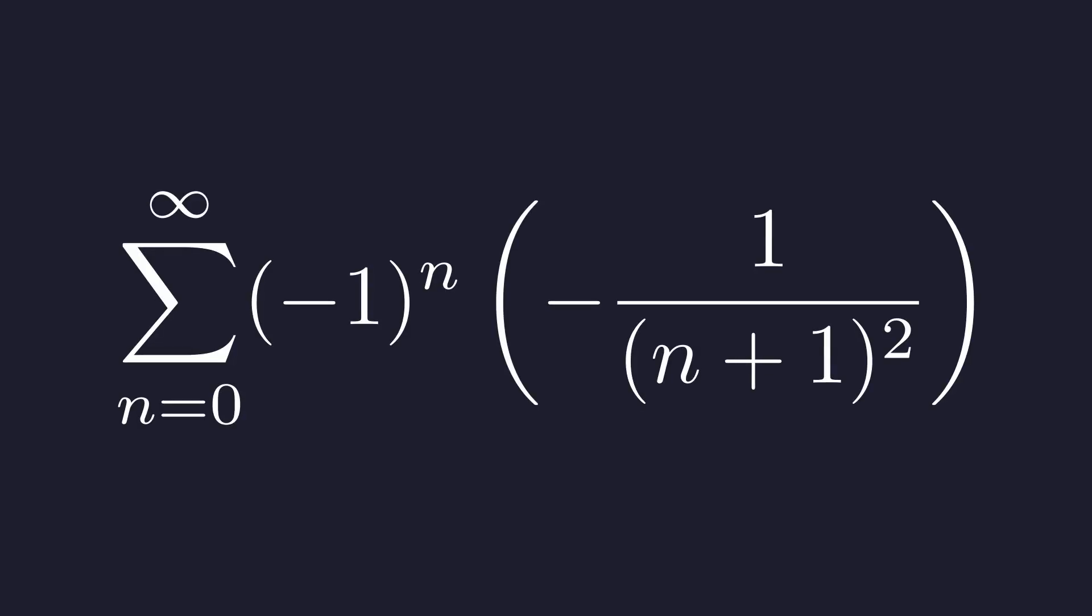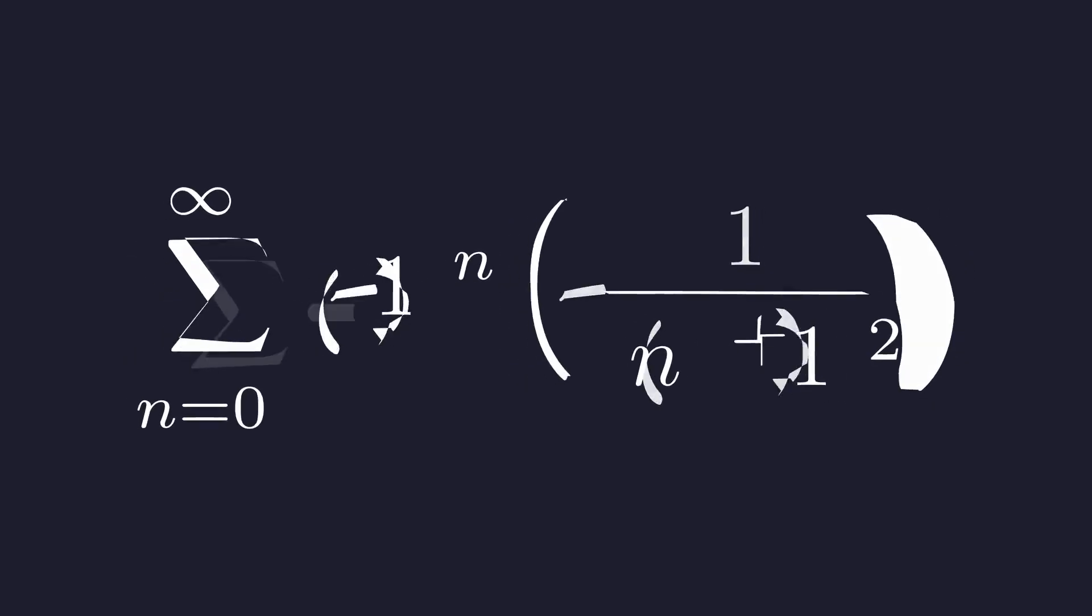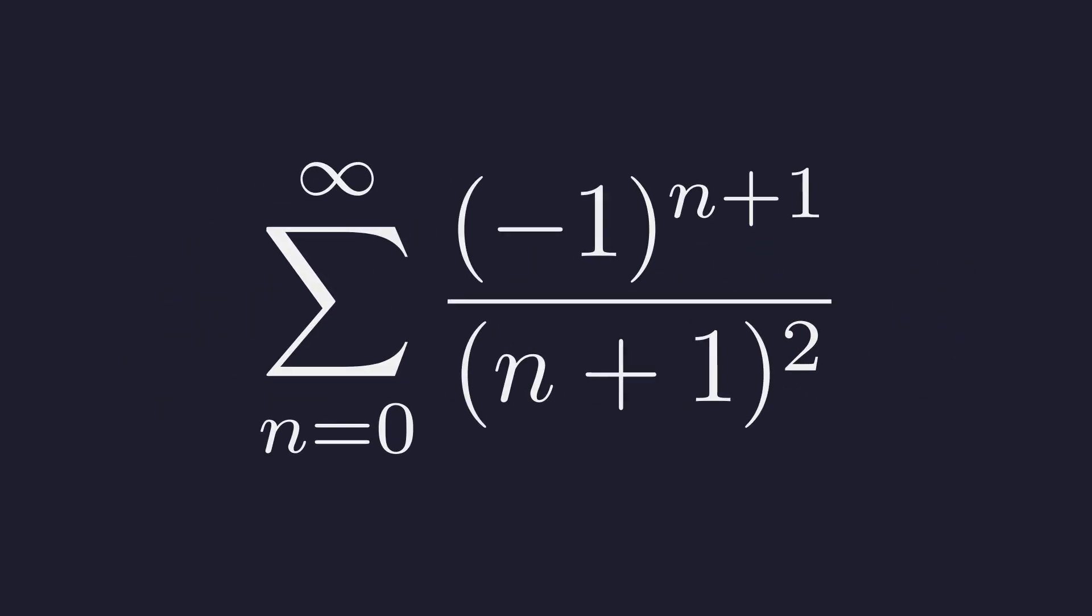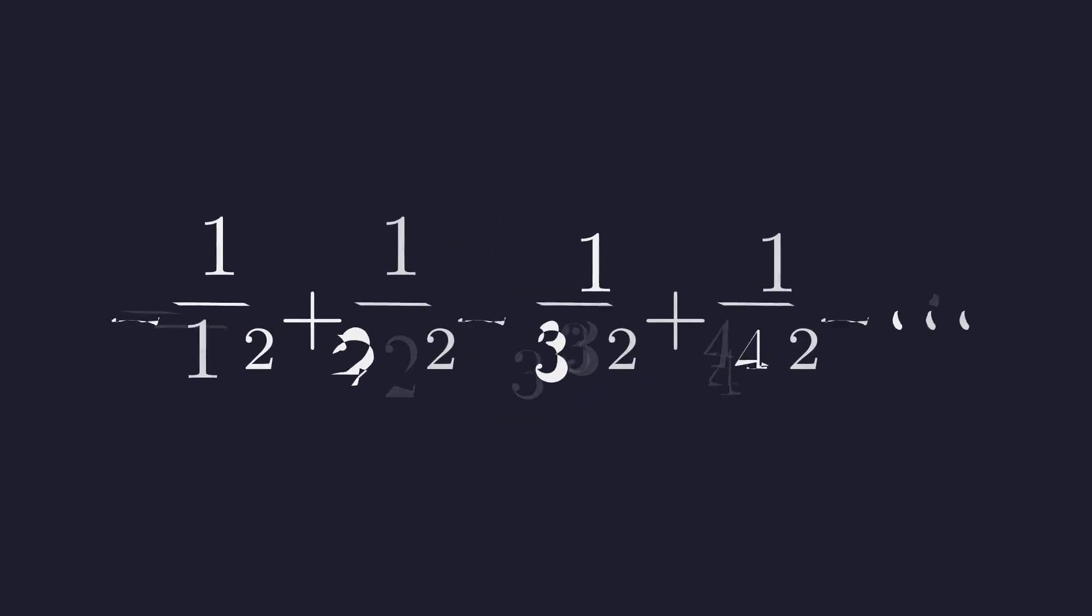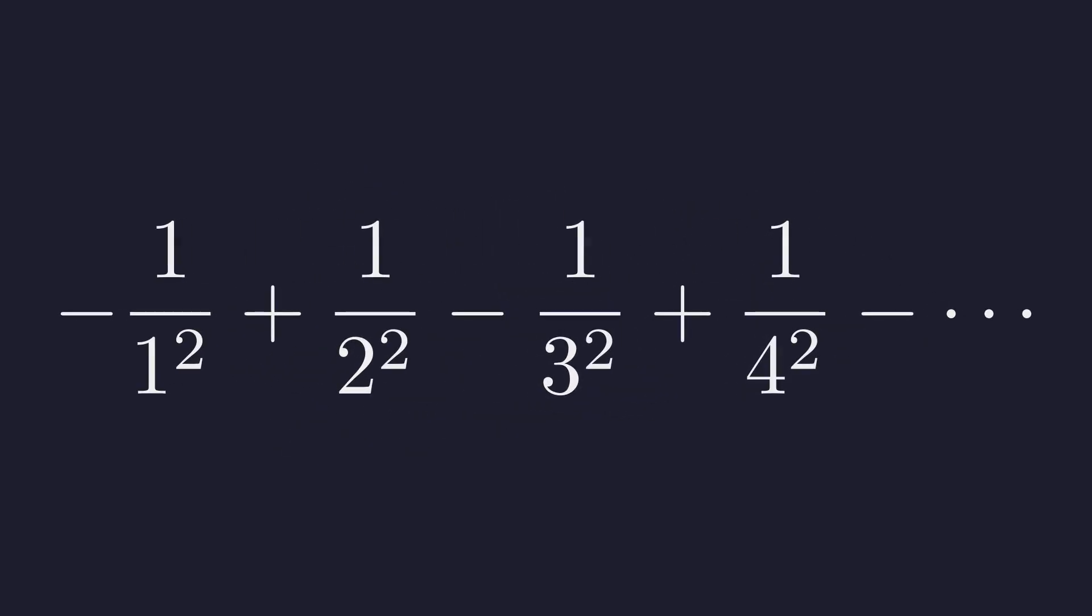Now watch what happens when we bring this back. Now we plug this back into our infinite sum. So our original integral equals this sum. We can combine the negative signs. Let me write this out. An alternating sum of reciprocal squares. Pause for a second. If you've studied advanced mathematics, you might recognize what's about to happen. This sum has a famous cousin.